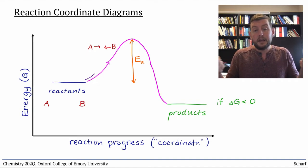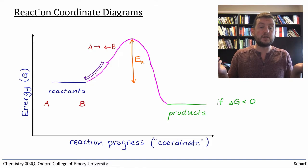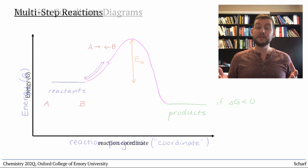If they collide with insufficient energy, then they just bounce off of each other and don't undergo a reaction. Sometimes, chemical reactions occur in a series of steps.